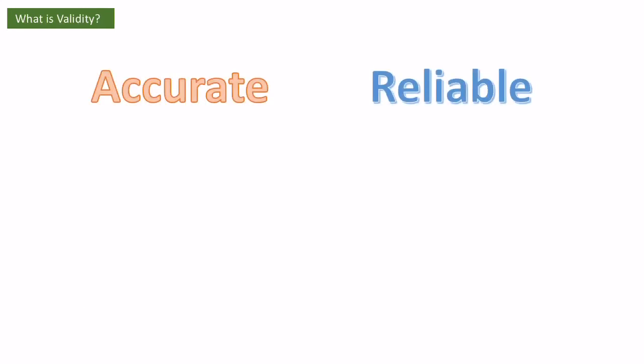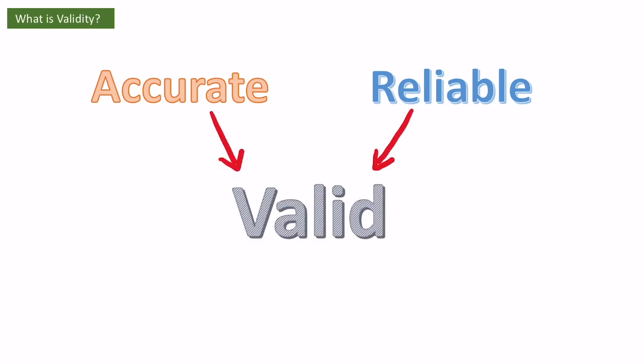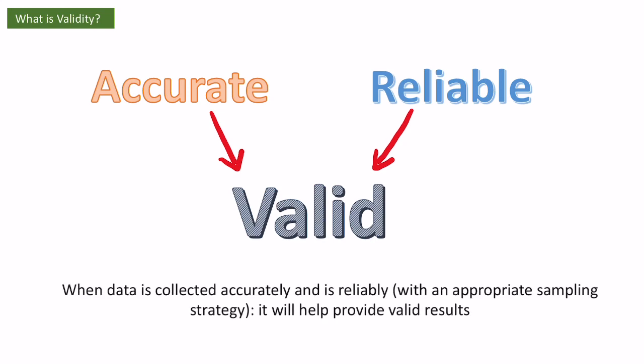The best way to think of validity is as a combination of both accuracy and reliability. If I have both, I'm valid. If I collect data in an accurate way and in a reliable way — using an appropriate sampling strategy and having enough data — it will give me valid results from which I can draw valid conclusions. So those are the three main terms — accuracy, reliability, and validity — which you need to know for evaluation of GCSE fieldwork and also A-level fieldwork.